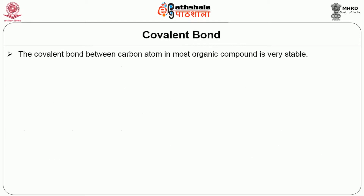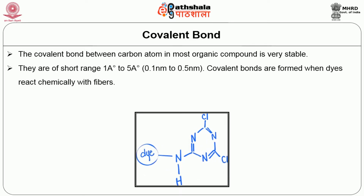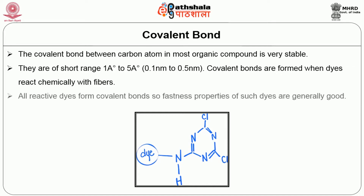Covalent bond. The covalent bond is stronger than other types of bonds. It is formed between carbon atoms in most organic compounds and is very stable. They are short range — 1 to 5 Angstroms. Covalent bonds are formed when dyes react chemically with fiber. All reactive dyes form covalent bonds, so fastness properties of such dyes are generally good compared to other types of dyes with respect to the textile material.